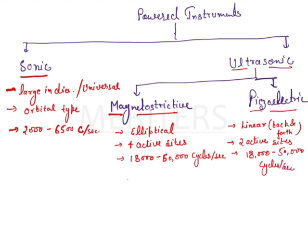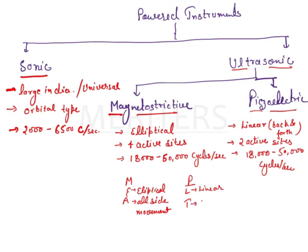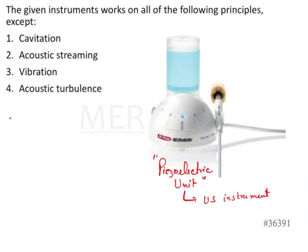You can remember this important information by a mnemonic: MPL. M is magnetostrictive, and PLT — P is piezoelectric, L is your elliptical for magnetostrictive and linear motion for piezoelectric, with all-side movement for magnetostrictive and two-side movement for piezoelectric. Now, coming back to the question — the piezoelectric unit activates the coolant, which is water, and this water gives three basic physiological effects.